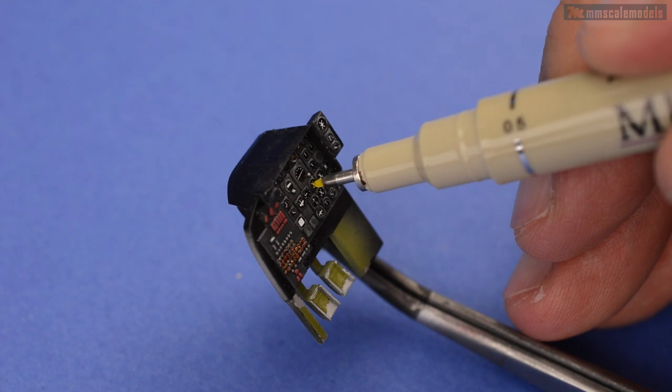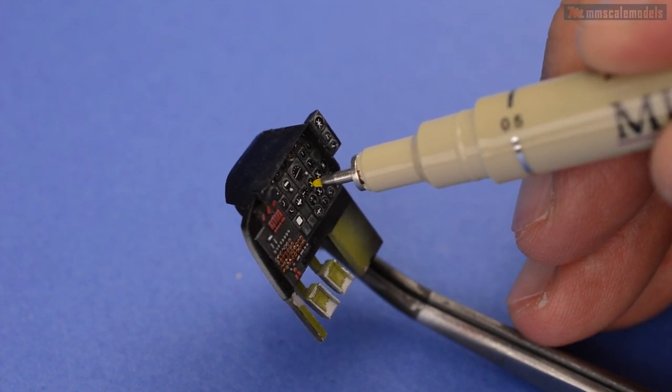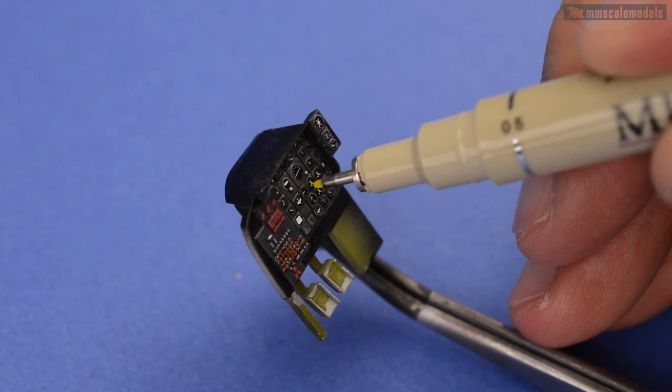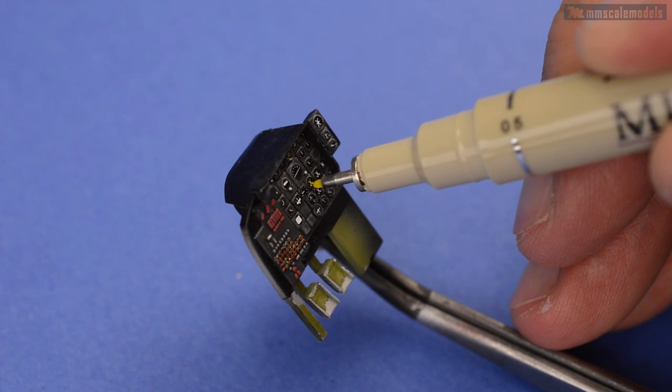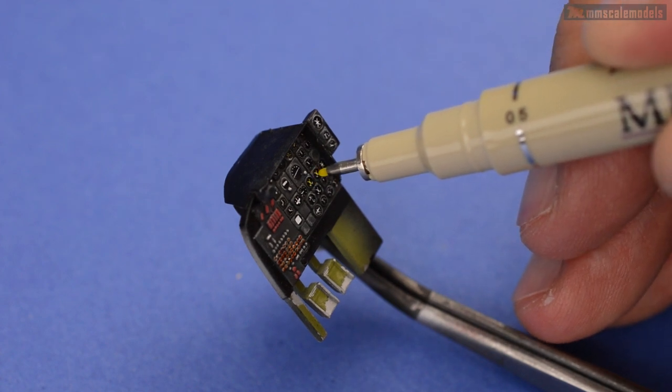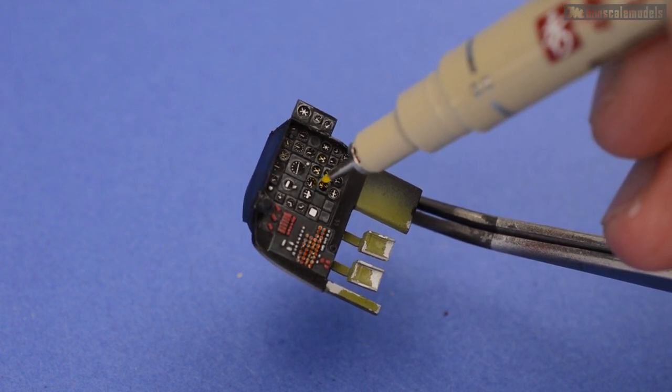Just like in the previous dashboard video we have the optional step of the yellowing instrument faces. This time I am going to use some sort of a marker simply applying the pigment on the instrument faces. Where this caught me off guard and surprised me was when I started applying the clear varnish to simulate the glass.